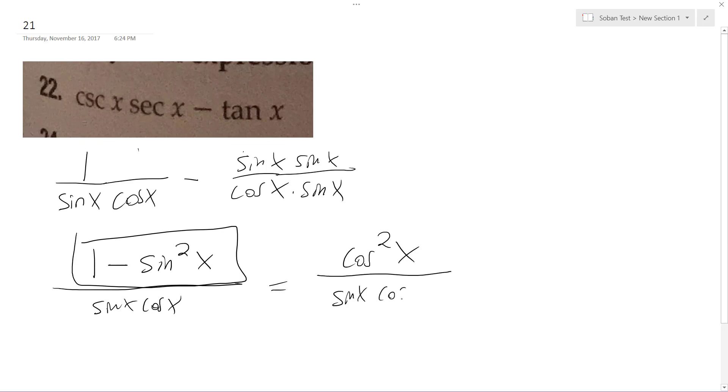So, sine x, cosine x, one of these cancels out, and we're just left with cosine x over sine x, which is equal to cotangent x.